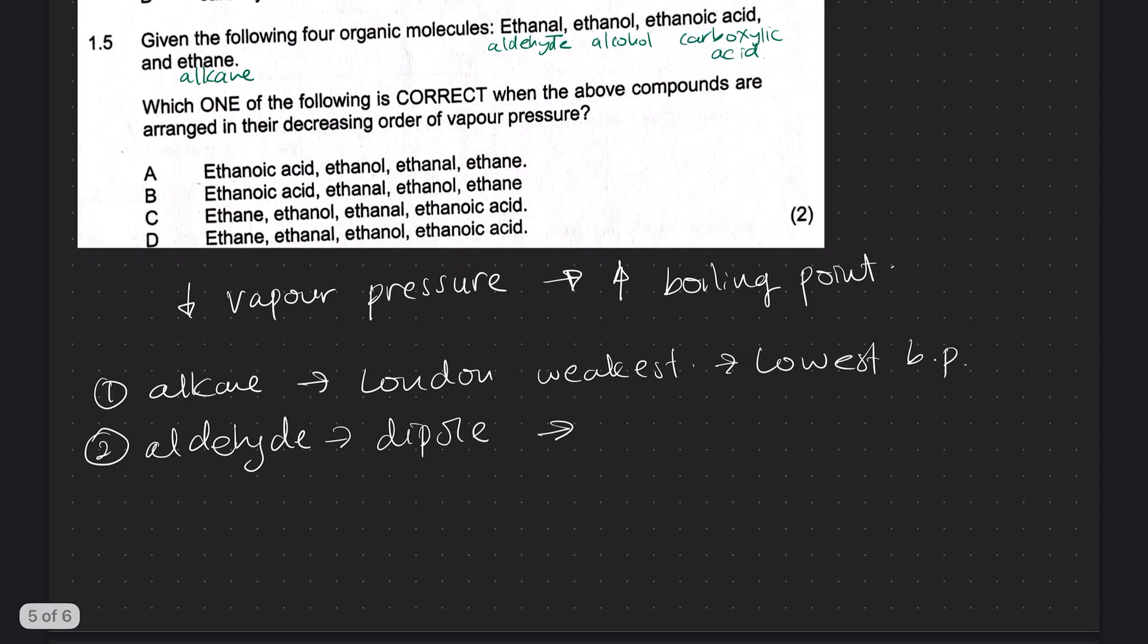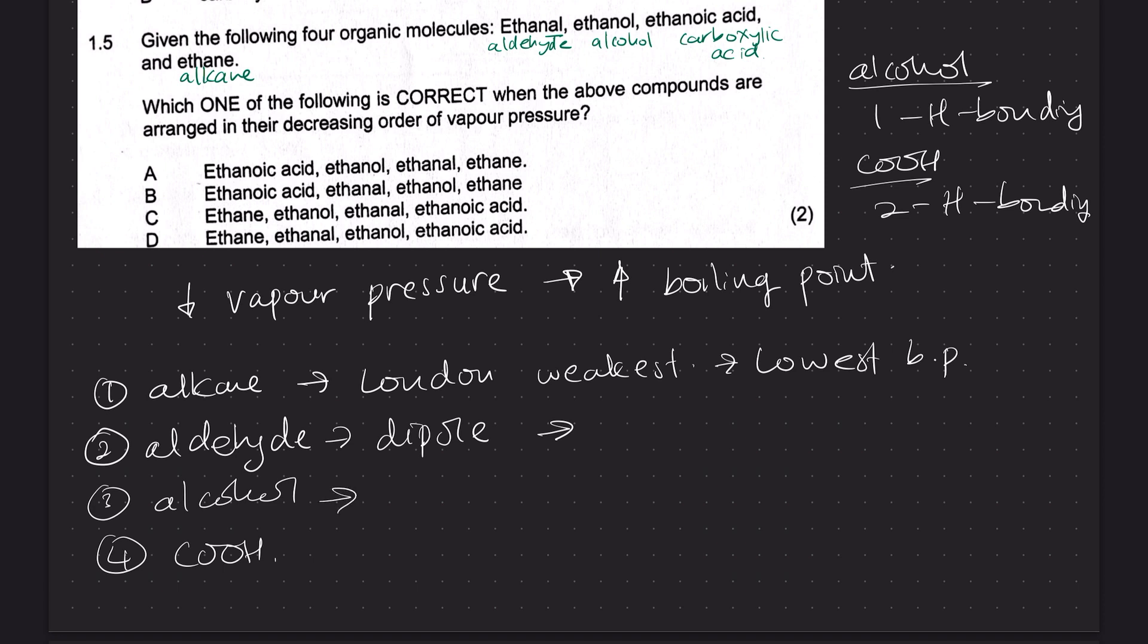Now, alcohol and carboxylic acid both have hydrogen bonding. But we need to remember that an alcohol has one position for hydrogen bonding. Whereas the carboxylic acid has two. So since it has two, the carboxylic acid will have a higher boiling point. So we should find the alcohol being three. And then the fourth one being the carboxylic acid. So one hydrogen bond. And this one will have two hydrogen bonds.